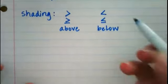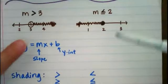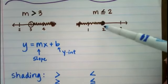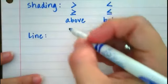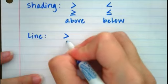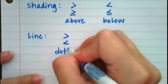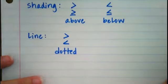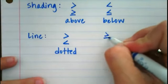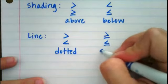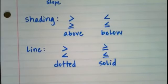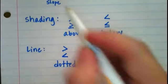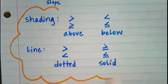We also need to talk about what kind of line to use. When we were doing the number line, we used an open dot or a solid dot. But since we're graphing lines: if it's greater than or less than, we use a dotted or dashed line; and if it's greater than or equal to, or less than or equal to, we use a solid line. This information is what is most important for what we're about to do.